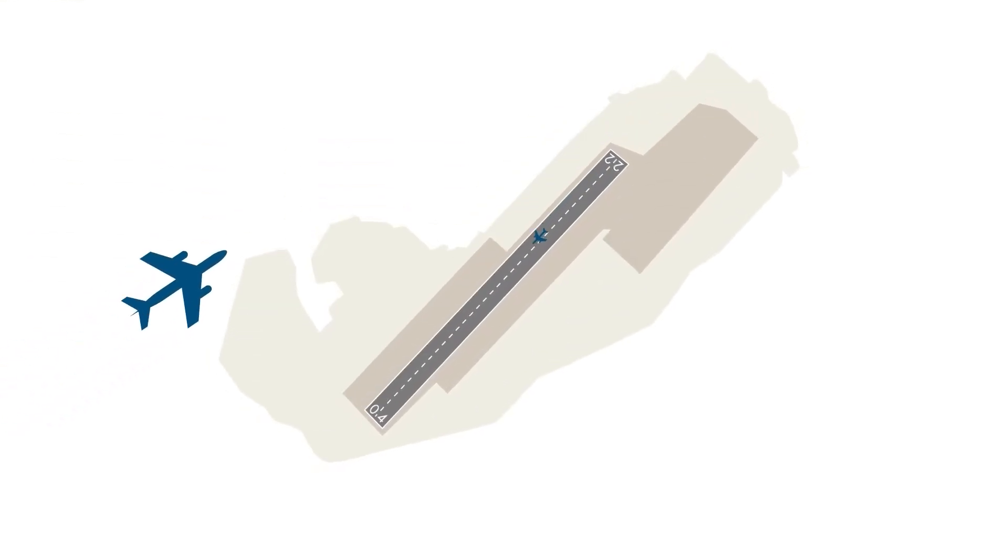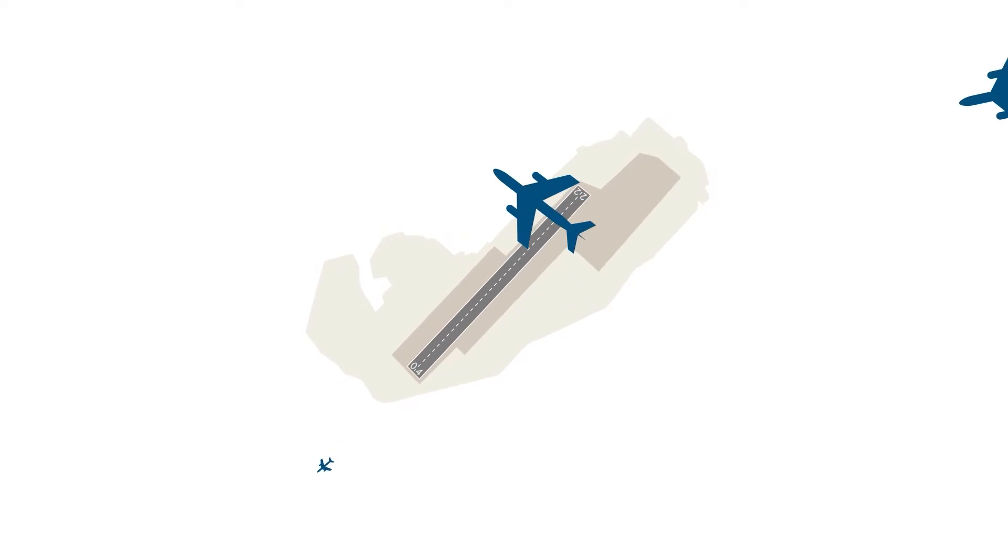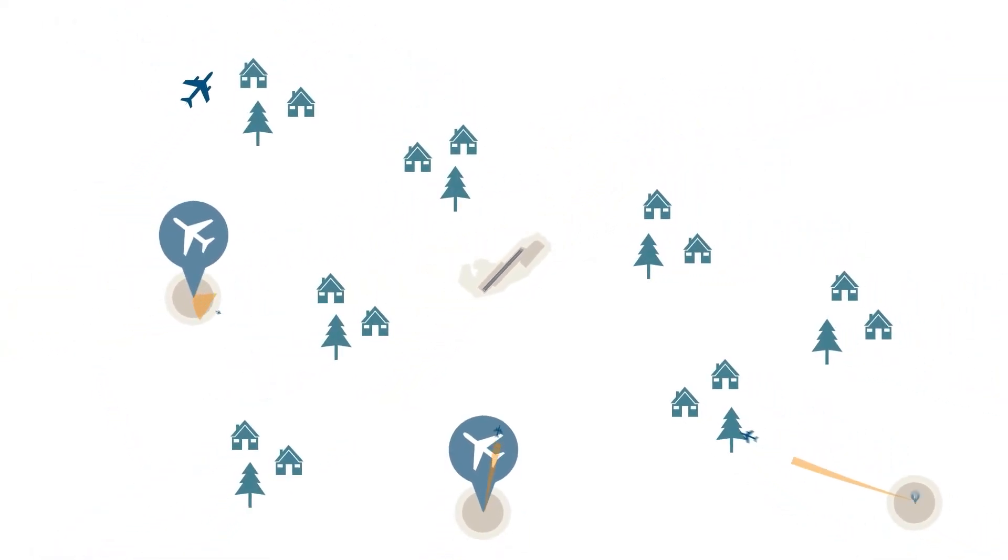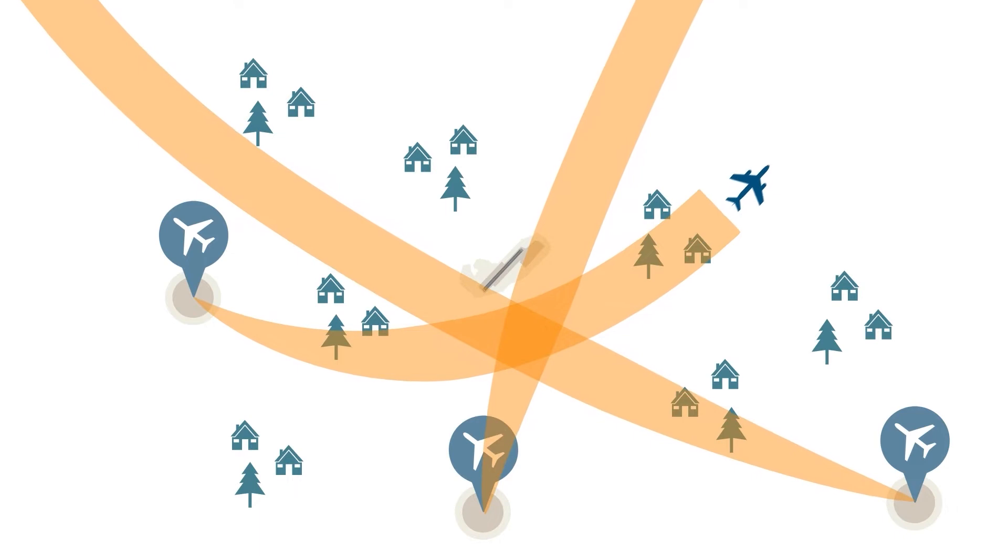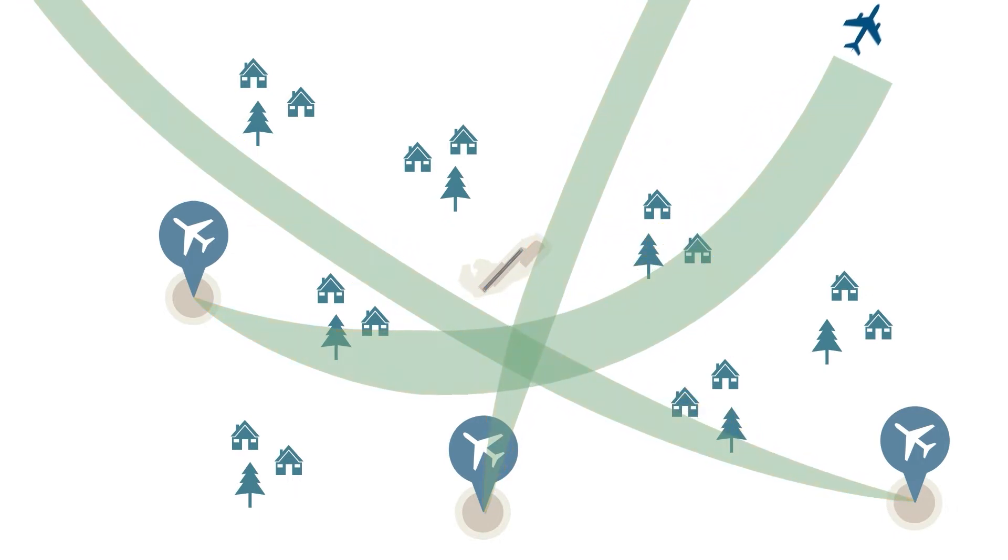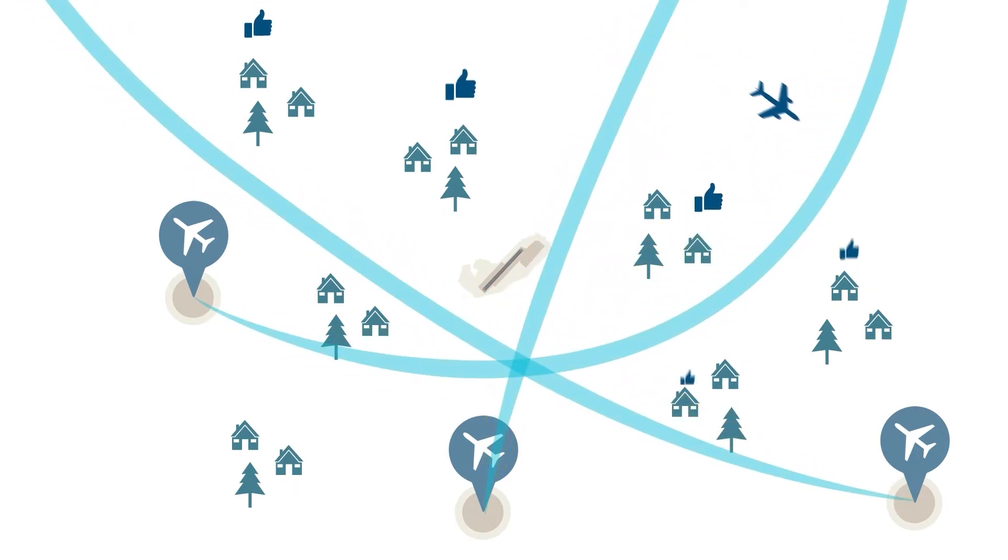Stansted sits within some of the busiest airspace in the world. The region is especially complex due to the proximity and number of other neighbouring airports, which has led to outdated and inefficient flight paths. Airspace modernisation could simplify this situation and offer a wide range of benefits to our local communities.